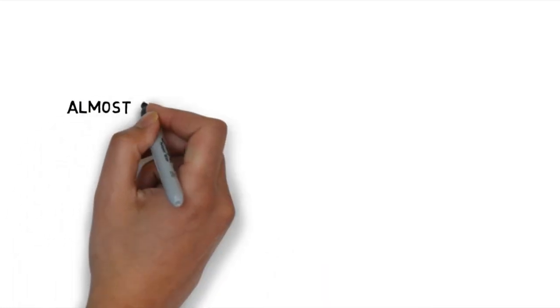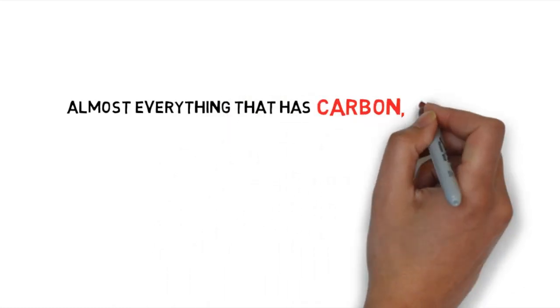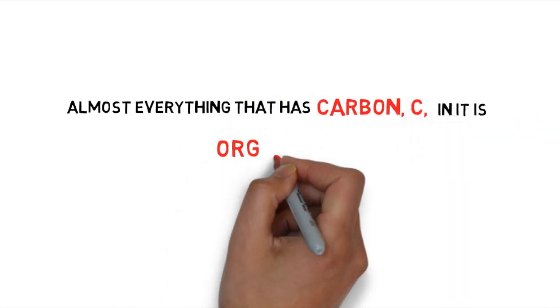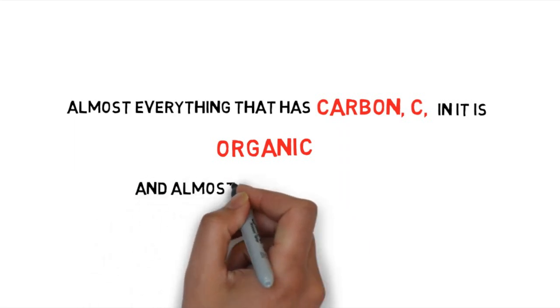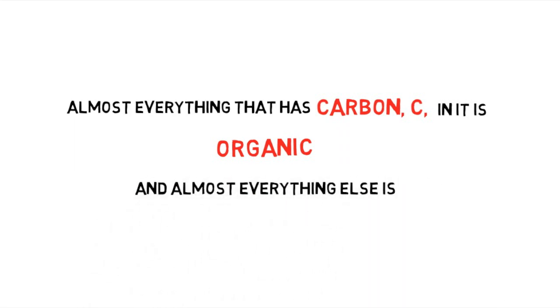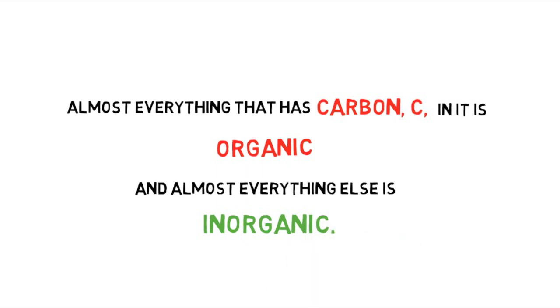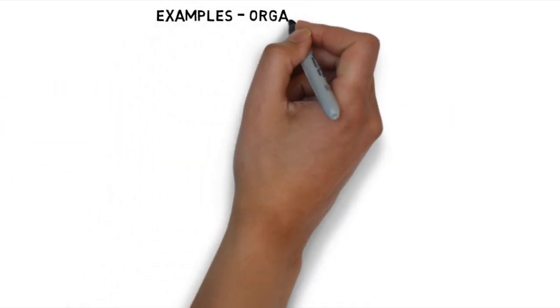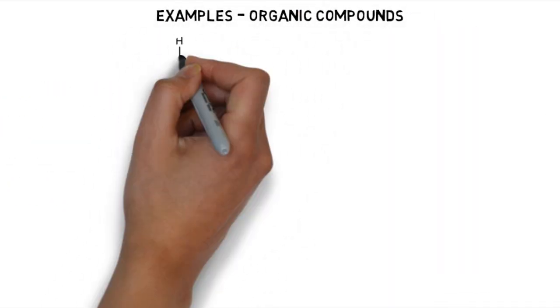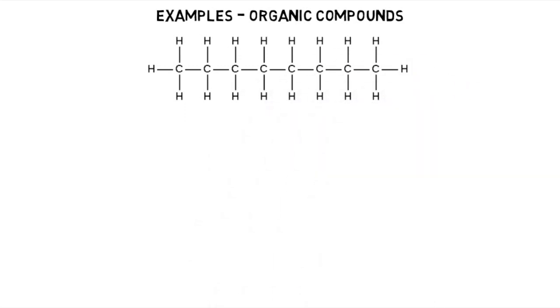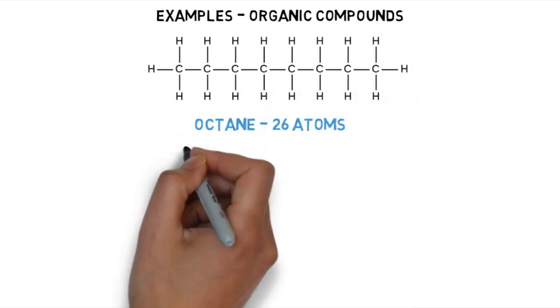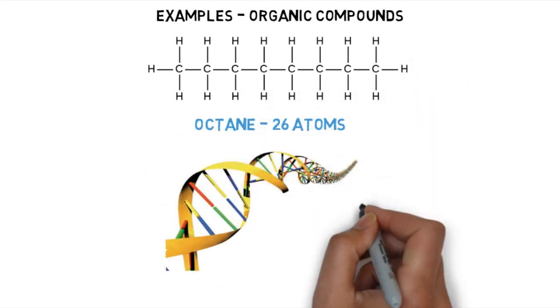Almost everything that has carbon in it is organic, and almost everything else is inorganic. There are a few exceptions, like carbon dioxide, so many people say organic compounds have a carbon-hydrogen bond. Turns out, because carbon is so special, it can form four strong bonds, most particularly with hydrogen, so it can make large organic compounds pretty easily.